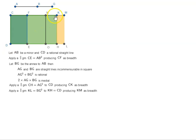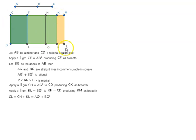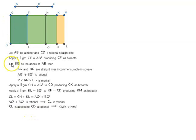The complete rectangle CL equals CH plus KL, which equals AG² plus BG². We know AG² plus BG² is rational, which means CL is rational. And since CL is applied to CD which is rational, and CL is rational, CM is also rational.